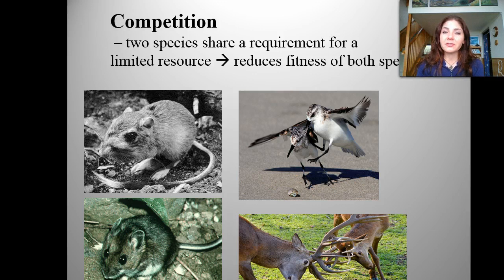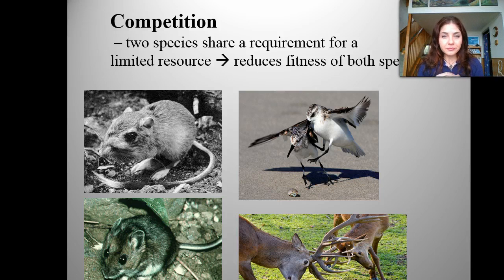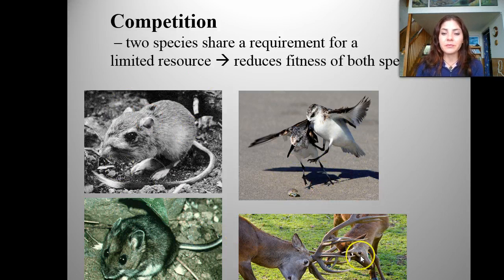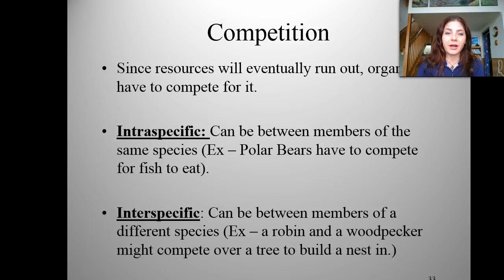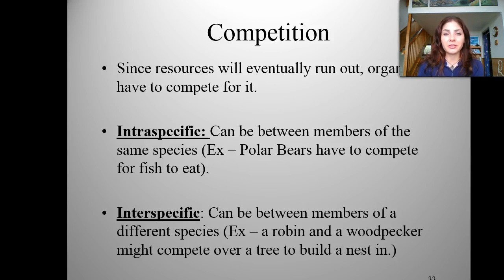We also have competition. This is when two species share a requirement for a limited resource, and it reduces the fitness of both species because both are expending energy and losing out. Examples include deer mice and kangaroo rats, two birds fighting over the same food source, and bucks competing for a mate. Since resources will eventually run out, organisms compete for them. There are two main types: intraspecific — between members of the same species, like polar bears competing for the same fish — and interspecific — between members of different species, like a robin and a woodpecker competing over a tree to build a nest.